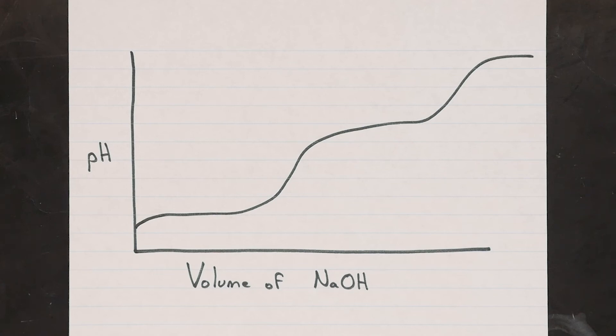When we're satisfied that these lines follow our buffer region data well and are parallel, we measure the distance between them. Let's call it D. Now we find the point on our curve that crosses exactly one half of D. The volume at that point is the volume of NaOH at the first equivalence point.